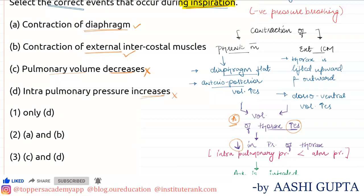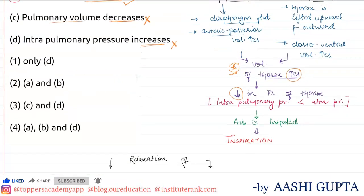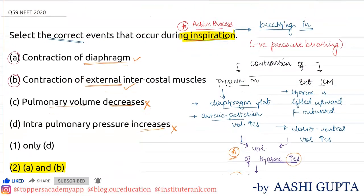Hence, this is also incorrect. Our correct statements are the first and second ones. So the right option should be option number 2, which has A and B as the correct options. I hope you understood. Thank you.